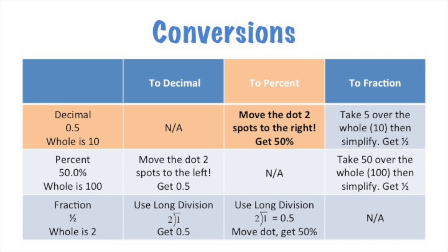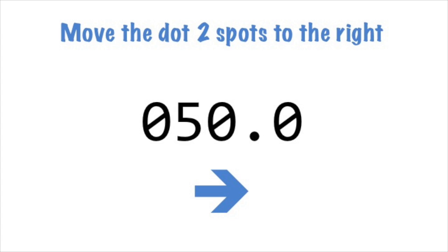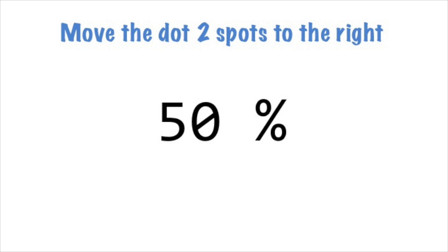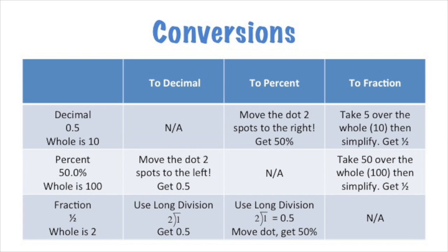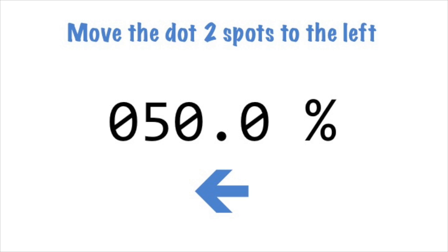Converting decimals to percents: move the dot two spots to the right. Converting percents to decimals: move the dot two spots to the left.